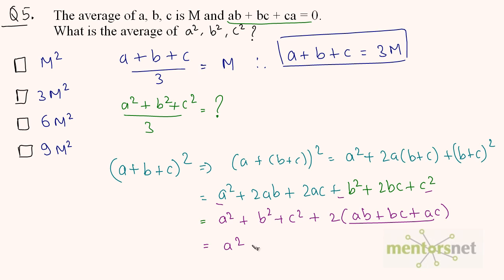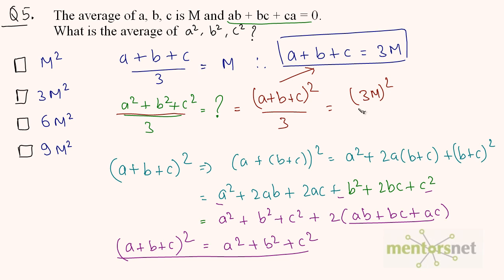Since AB plus BC plus CA equals 0, what remains is A² plus B² plus C² equals (A plus B plus C)². So the average is A² plus B² plus C² divided by 3, which equals (A plus B plus C)² divided by 3. Substituting 3m for A plus B plus C: (3m)² divided by 3 equals 9m² divided by 3, which equals 3m². Option B.